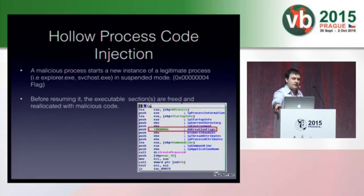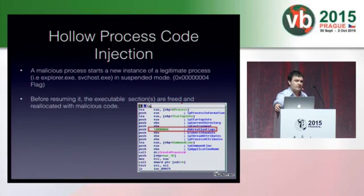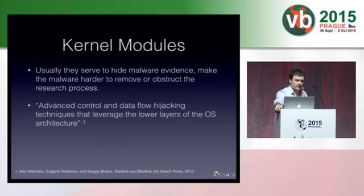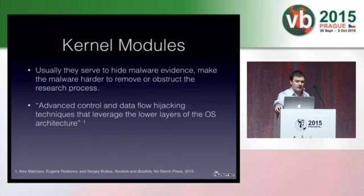Process hollowing is used by malware to make a process look legitimate. A malicious process starts a new instance of a legitimate process, for example Internet Explorer, in a suspended mode. Before resuming the executable, the sections are freed and relocated with malicious code. Kernel modules usually serve to hide the malware evidence, make the malware harder to remove, or obstruct the research process — advanced control and data flow hijacking techniques that leverage the lower layers of the OS architecture.